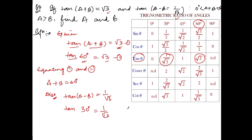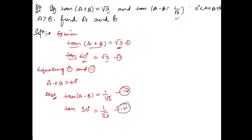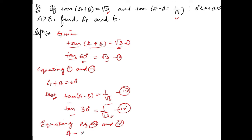So equating equation 3 and 4 — since 1/√3 = 1/√3 and tan = tan — a-b is equal to 30°. So a-b = 30°.